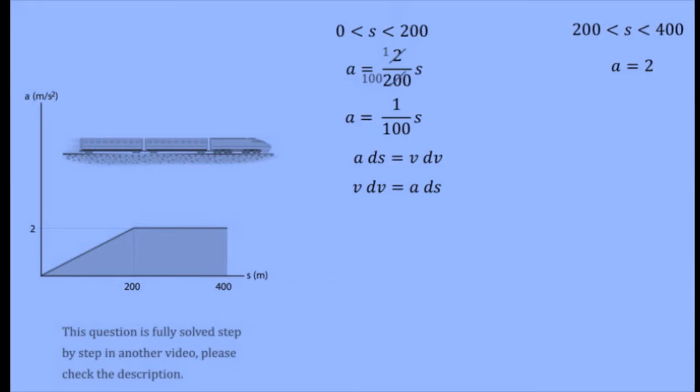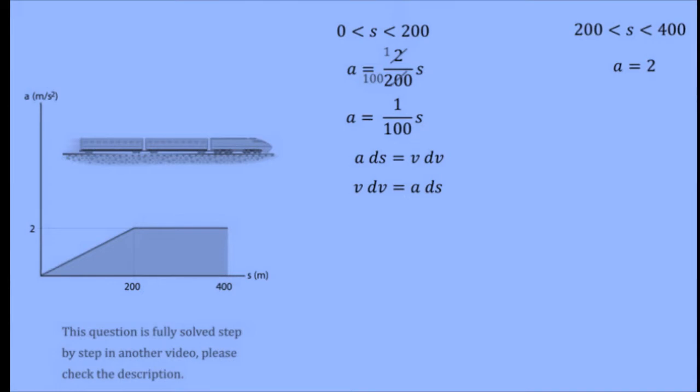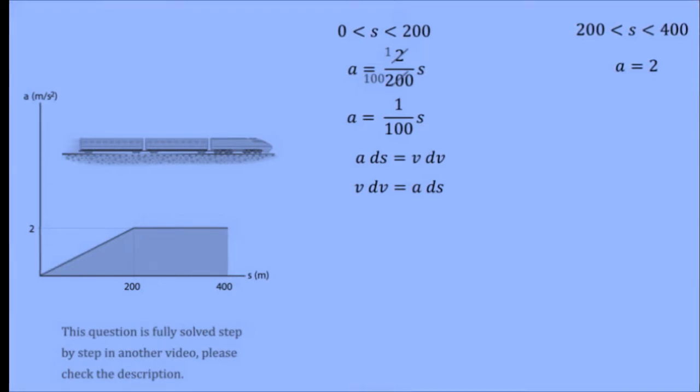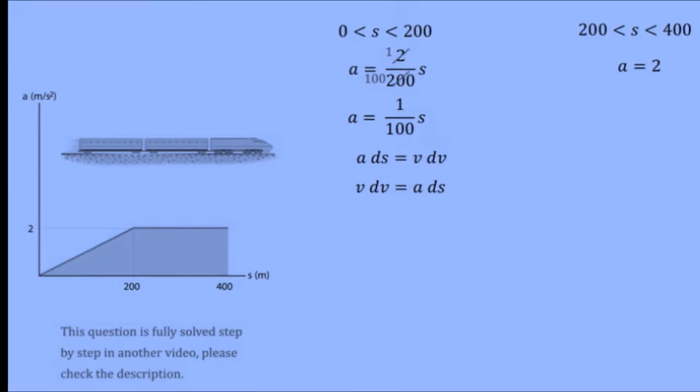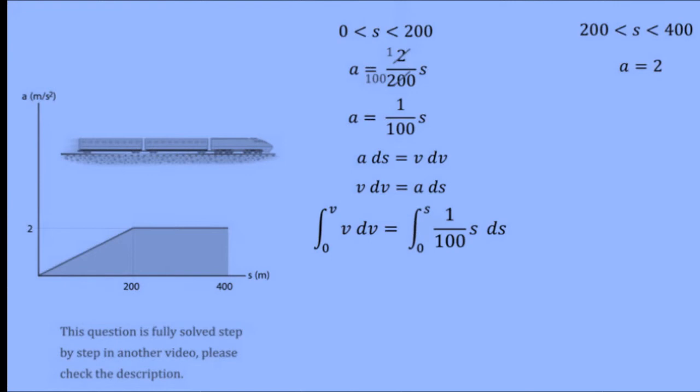In this sample problem, the two equations for the segments are a equals 1 over 200 s and a equals 2. All we need to do is substitute this into our equation and take the integral, so we end up with this integral.